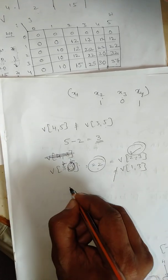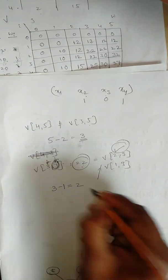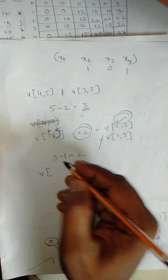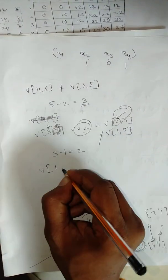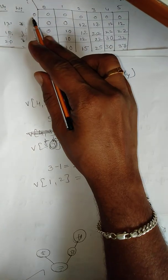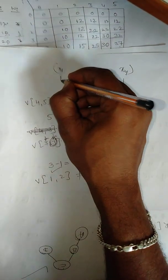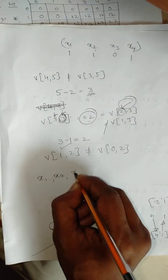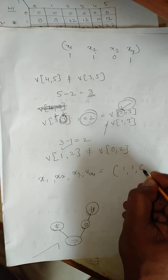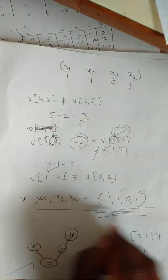With remaining capacity 2, check V(1,2) = 12. Is it equal to V(0,2) = 0? No, they are not equal. Therefore, item 1 must be included: x1 = 1. The optimal solution is x1=1, x2=1, x3=0, x4=1, meaning we include the first, second, and fourth items in the knapsack to obtain the maximum profit of 37.